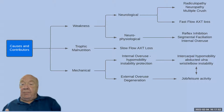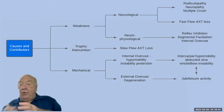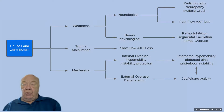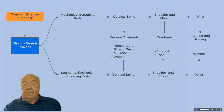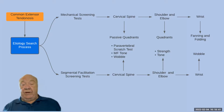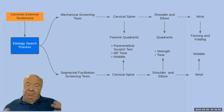For tennis elbow, you're looking at intercarpal hypomobility caused by an abducted ulna, as well as wrist or elbow instability. External overuse — just doing way too much for what your muscle can deal with — gradually leads to degeneration and breakdown. So, assuming we don't get a history of severe unfamiliar overuse, if there's a tendinosis and the patient isn't doing something over a restricted period that then breaks down, then you're looking for something internal to trigger the whole thing off.